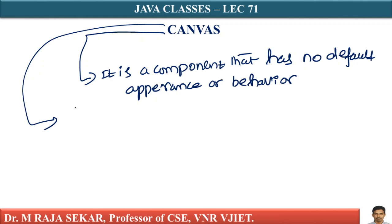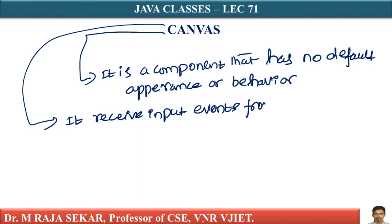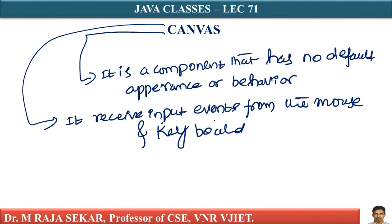Canvas receives input events from the mouse and keyboard. It is up to the programmer to convert these events into a meaningful look and feel.